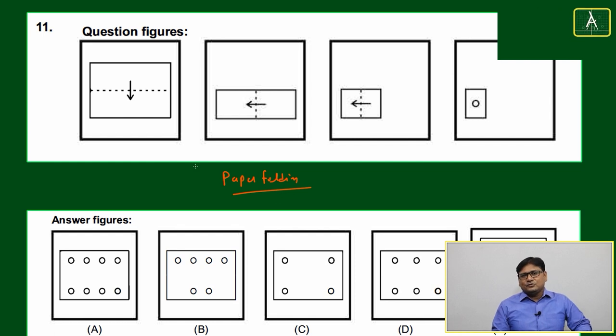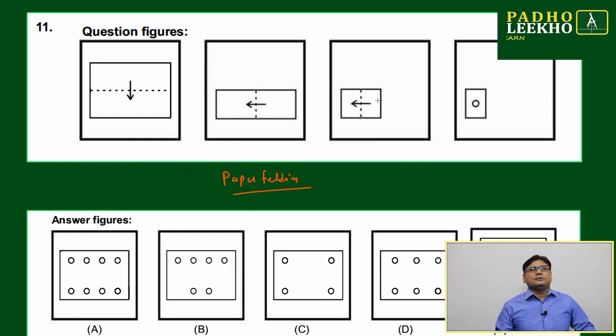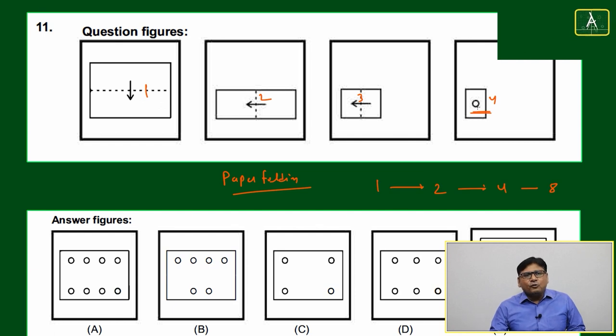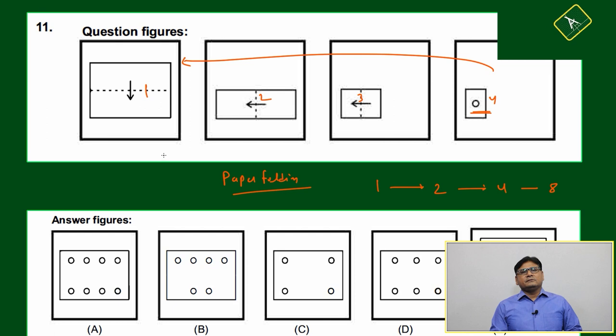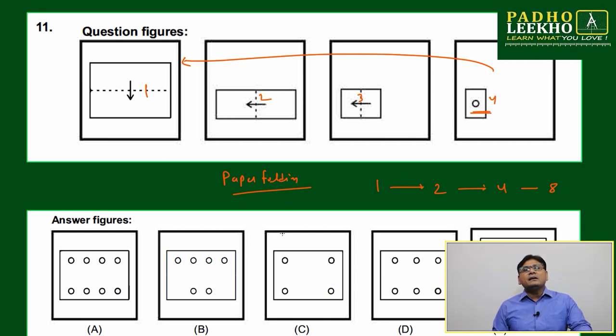Looking at the option choices, I will show you how many foldings are happening here: one, two, three, four. Four foldings are happening. After unfolding, once we go from here to here and unfold the paper, how many holes must be there? You must have eight holes.